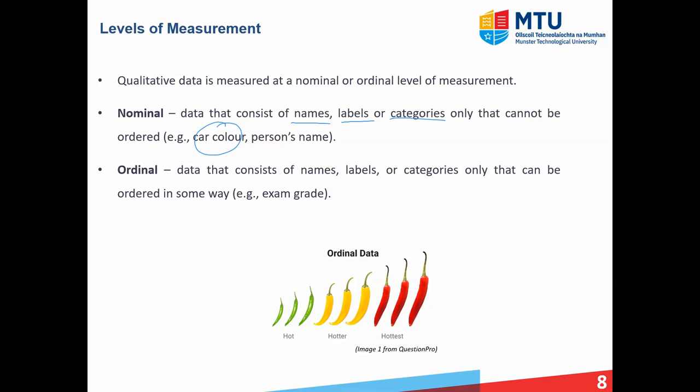Whereas with an ordinal, there is an order in there. For example, down here in this image, we have different categories used to categorise peppers and how spicy they are. So the names, you pick a pepper, you measure its spiciness, or how hot it is. You go from hot, hotter to hottest. So they again are names, which is what we have with a category or qualitative data. But there is an order to those. Another example is exam grade, A, B, C, D. There's their names again, but there's an order to them. So an ordinal level or measurement would be used with them.